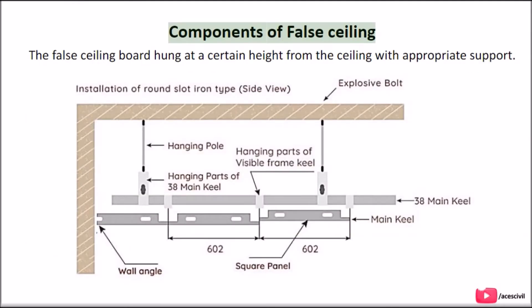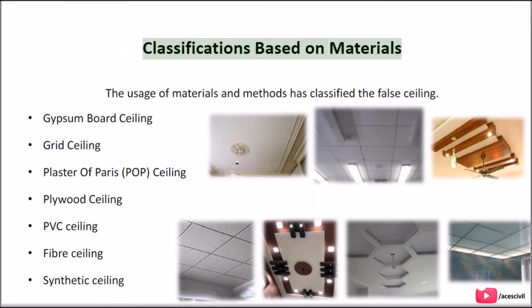Components of Fall Ceiling: the fall ceiling board is hung at a certain height from the ceiling with appropriate support. The usage of materials and methods has classified the fall ceiling into several types.